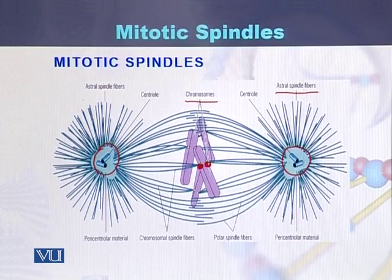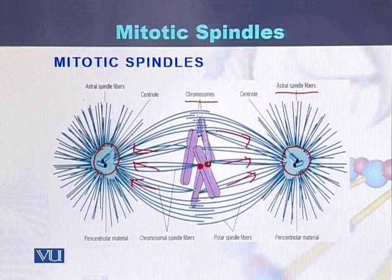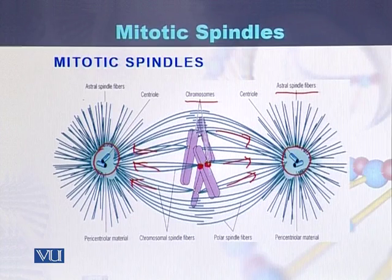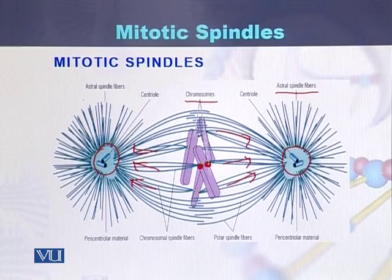With the help of these spindle fibers, chromosomes move in the direction of the poles. In addition to spindle fibers attached to the kinetochore, there are some additional spindle fibers which do not attach to the kinetochore of the chromosomes. They actually push the poles and make the cell change from round into oval.